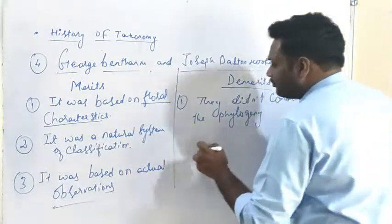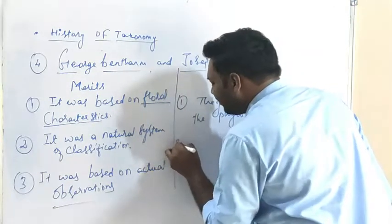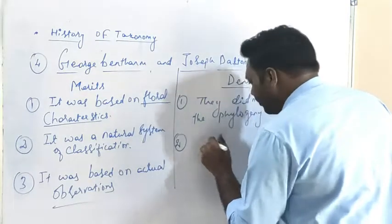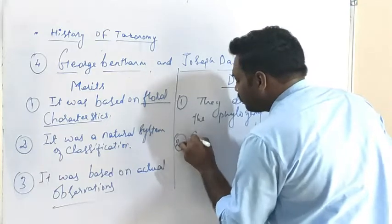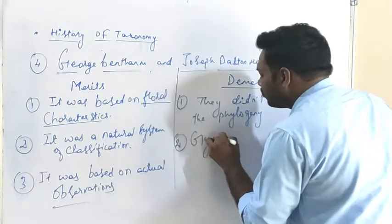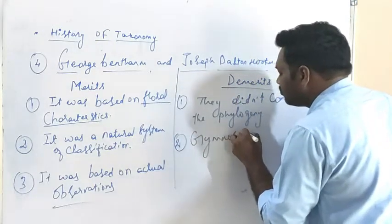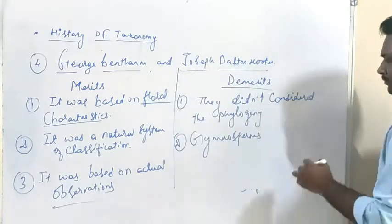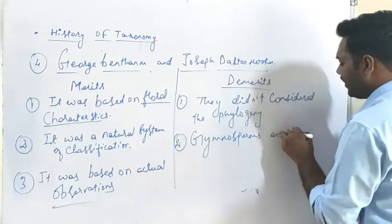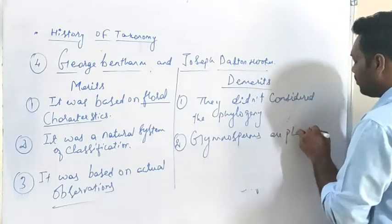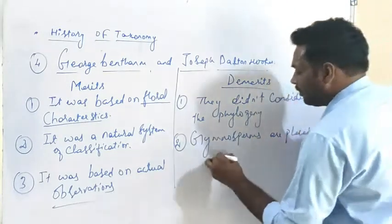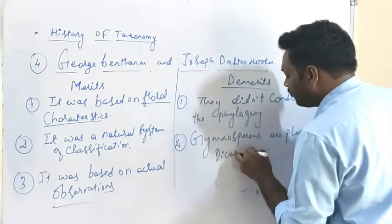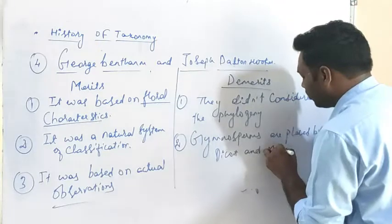The second demerit is that Gymnosperms are placed between Dicotyledonae and Monocotyledonae, which is considered an inappropriate placement.